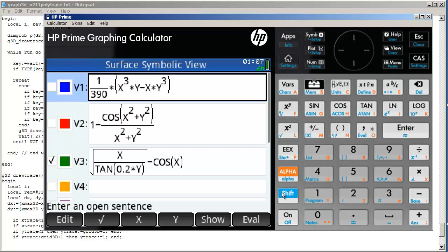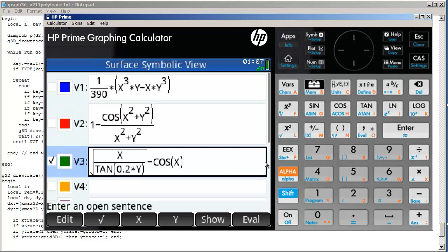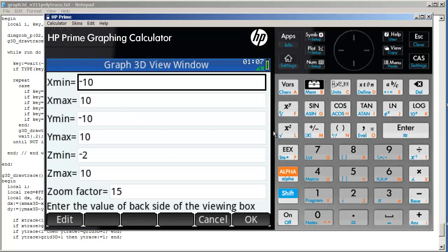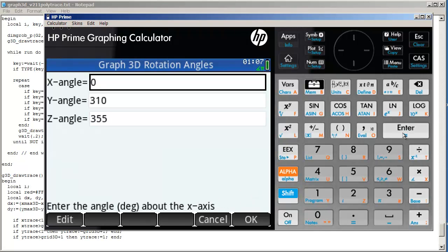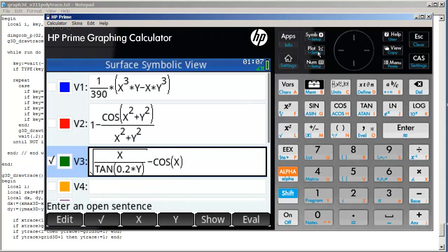So we're going to graph this crazy looking surface here, which has quite a few sections of undefined regions. And our plotting window is as you see here. And let's go ahead and hit plot.